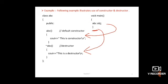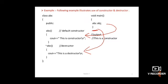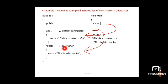Always remember: the destructor is invoked automatically and implicitly by the compiler. When the control comes out of the end brace of main, the destructor is automatically and implicitly invoked. So don't write obj.abc() to call it — that is totally wrong. The output is: first 'this is constructor' is printed, then 'this is a destructor' is printed.